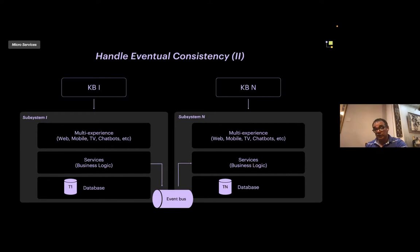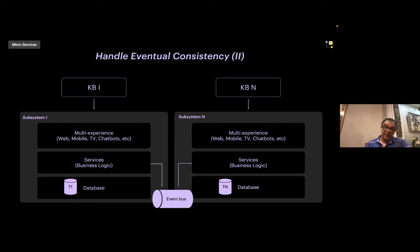Another mechanism for handling data replication is, instead of updating synchronously all the replicated data in another knowledge base's table, you can use event-based communication. The data owner records the datum with a special topic, and anyone subscribed to that topic will see that the datum has changed and it will be updated. That is probably the safest mechanism if you want to deal with data consistency.